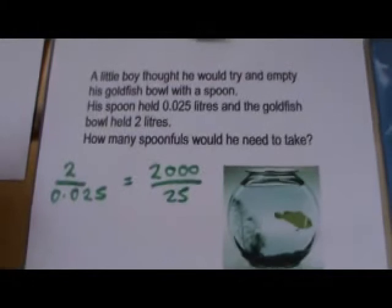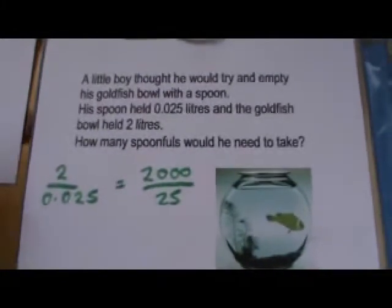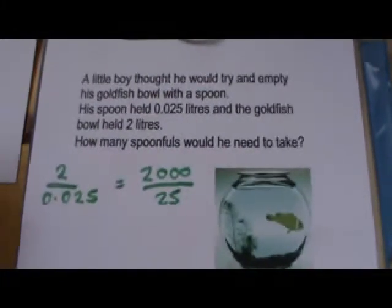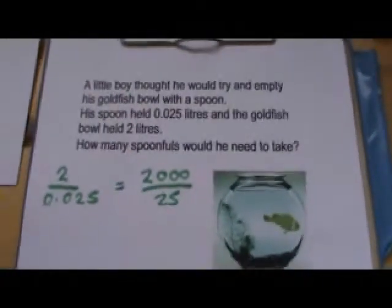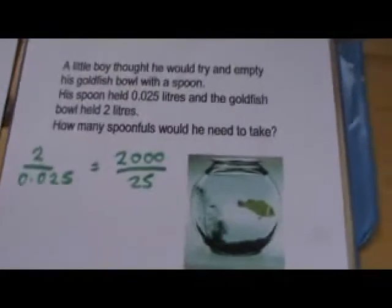So in millilitres, the goldfish bowl holds 2,000 millilitres and the spoon holds 25 millilitres. So we've made our sum a lot easier by getting rid of the decimal point.